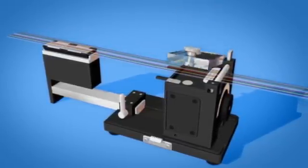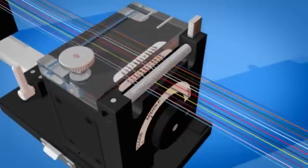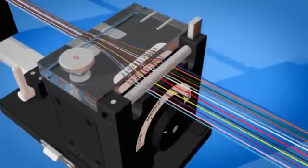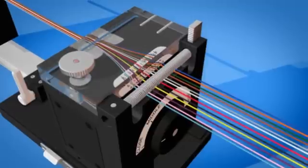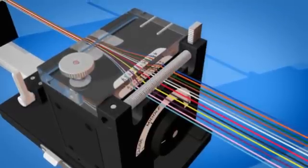Close the arrangement cover. Rotate the handle to close the arrangement arms, bringing the fibers to the center of the arrangement stand. Note that the arms stop at three positions.